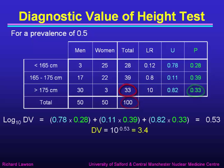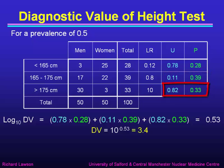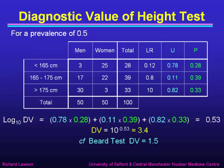To get the diagnostic value for the height test, we take 0.78 times 0.28, plus 0.11 times 0.39, plus 0.82 times 0.33, and add all those up; that comes to 0.53. The diagnostic value is therefore 10 to the power of 0.53, which is 3.4. The beard test had a diagnostic value of 1.5, so on these grounds the height test is better than the beard test — it is more often useful in giving a conclusive result. We now have one number, the diagnostic value, for each test, which allows us to assess which is better.